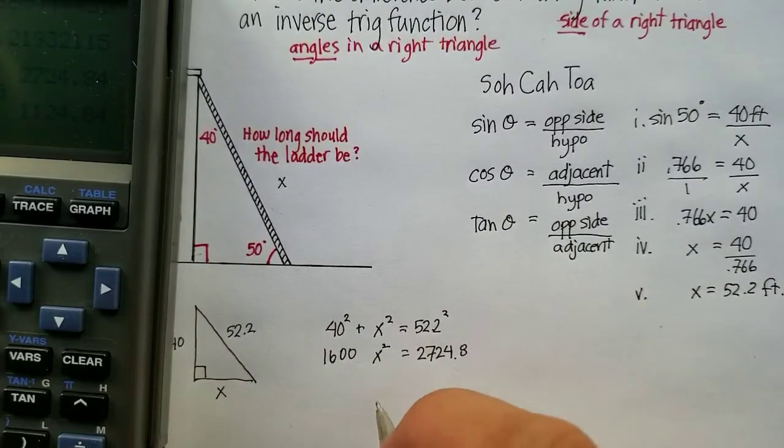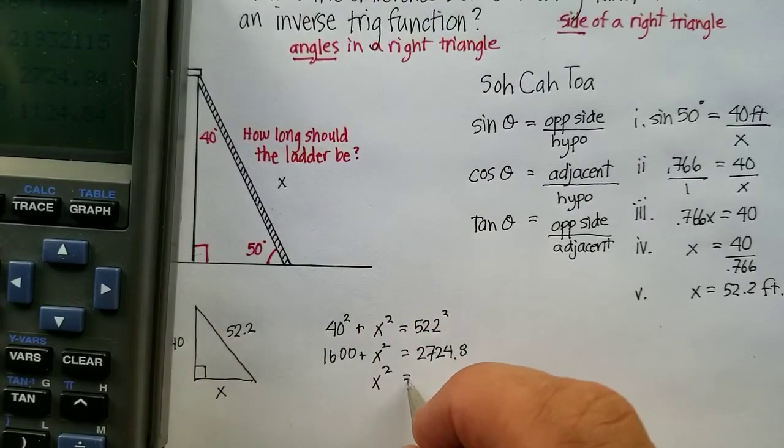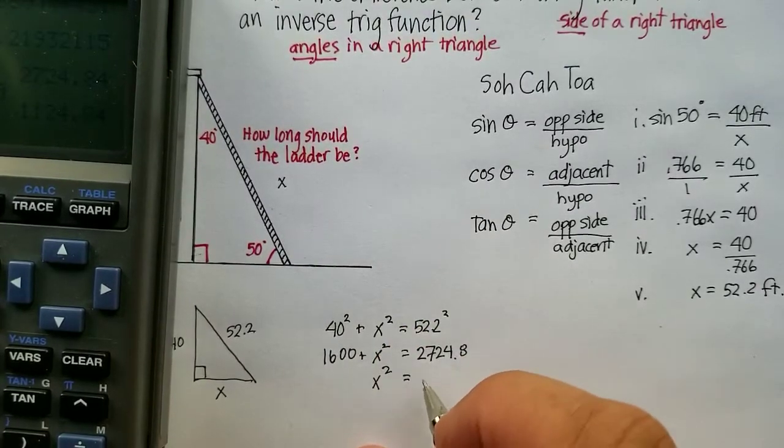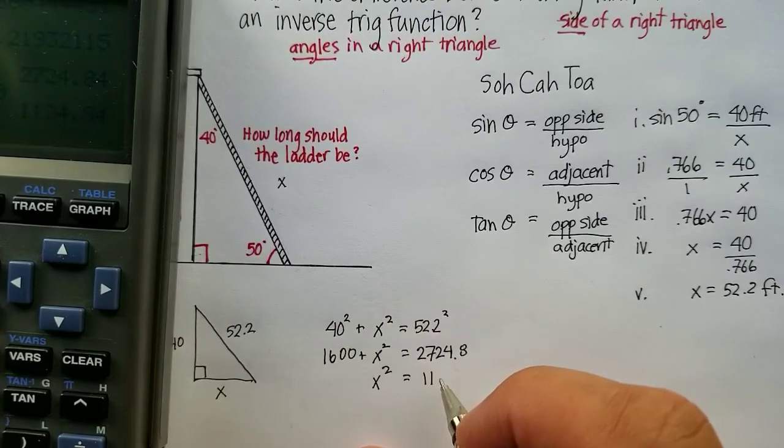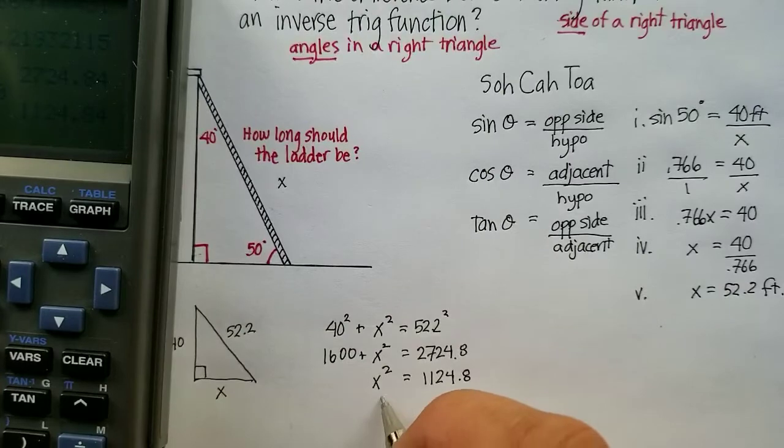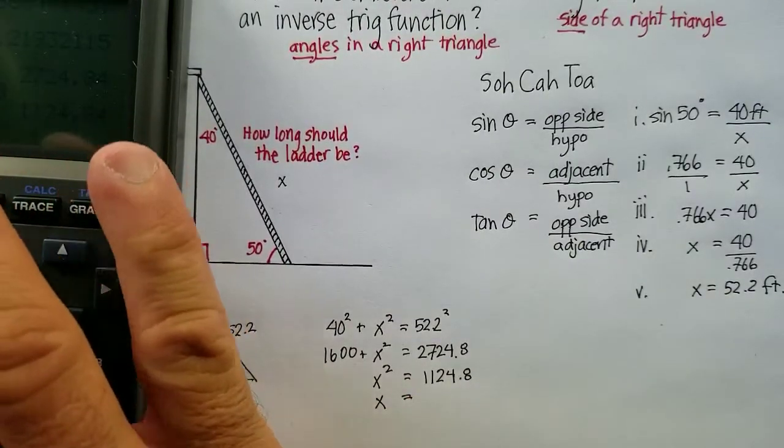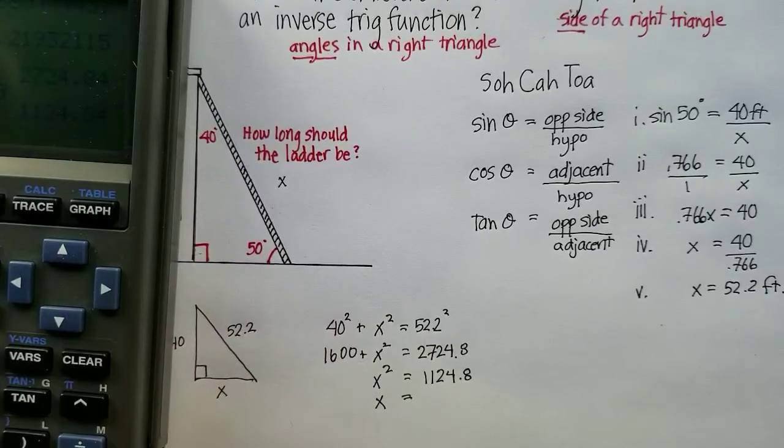And you're going to get x squared is equal to 1,124.8. Let's take the square root of both sides. And you get square root of 1,124.84. You get 33.5.